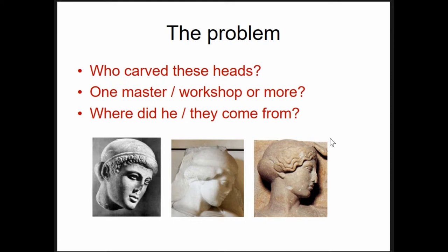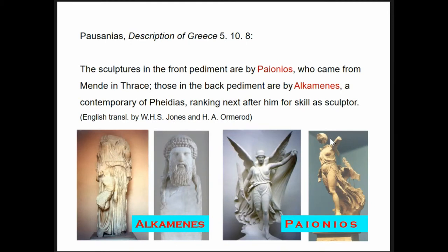If we cannot answer who carved them by definitive names — some people try, some deny this possibility — at least we should be able to localize the origin of these masters. We also have some written evidence from the 2nd century AD, many centuries after the production of these sculptures. An author called Pausanias was travelling there and collected information concerning these sculptors, naming two of them: one for the East and one for the West pediment.